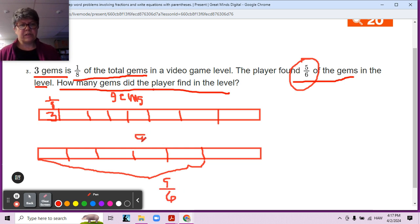And this is also gems in the level, right? Okay. So this would be like five-sixths of the total gems of the level, and three is one-eighth of the gems of the level. I think I'm starting to understand.